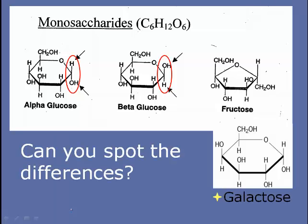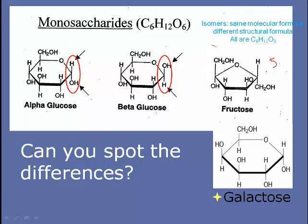If we look at all of these monosaccharides, we'll see that they all have a formula of C6H12O6 — the atoms are just arranged differently. This is because they're isomers: they have the same molecular formula but different structural formulas. There are two forms of glucose shown here, alpha glucose and beta glucose, and the only real difference is in the placement of the hydrogen and the hydroxyl groups. You can also see fructose and galactose. Fructose stands out as quite different structurally because it's a pentose, or five-sided sugar.